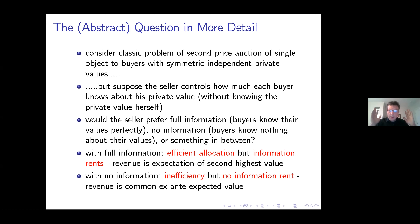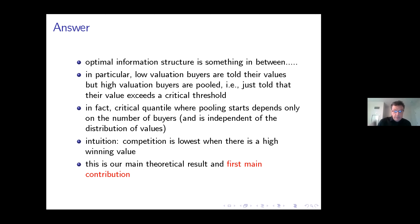Indeed, we're going to show that the optimal information structure is something in between, and a sharp characterization can be given as follows. The low value buyers are essentially told their value — so their information is completely disclosed — but all of the high valuation bidders are pooled. There's just a single threshold segment of high valuation buyers. All they're being told is that their value exceeds the threshold, but not more than that. The critical threshold depends just on the number of buyers — that is just on the level of competition — and is in fact independent of the distribution of values.